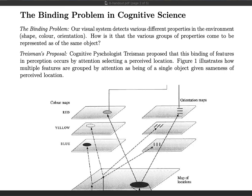The first idea needed to understand this theory of attention is the binding problem. Our visual system detects various different properties in the environment around us — properties such as shape, color, and orientation.